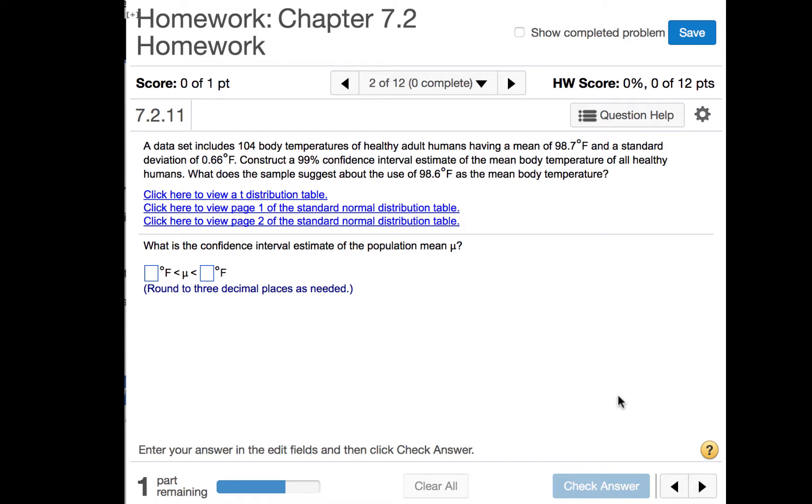A data set includes 104 body temperatures of healthy adult humans having a mean of 98.7 degrees Fahrenheit and a standard deviation of 0.66 degrees Fahrenheit. Construct a 99% confidence interval estimate of the mean body temperature of all healthy humans. What does the sample suggest about the use of 98.6 degrees Fahrenheit as the mean body temperature?